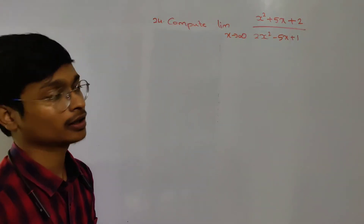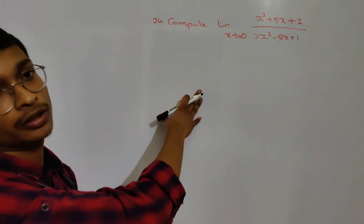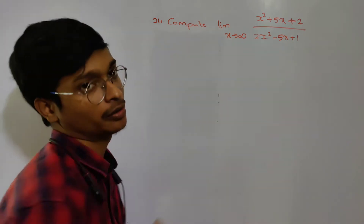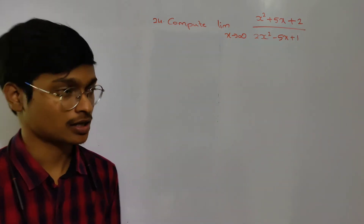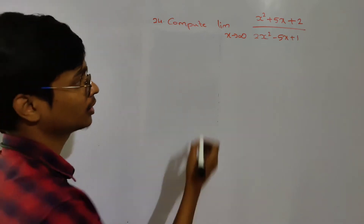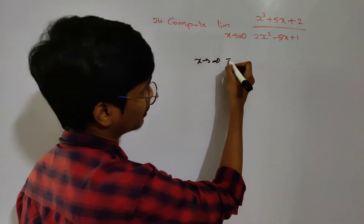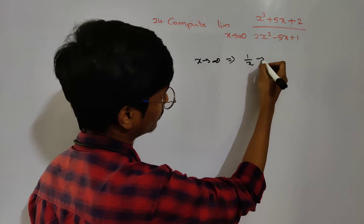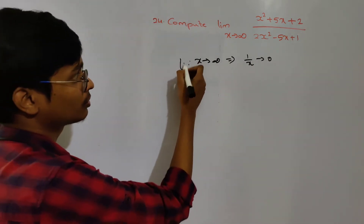This is the limit, sign, and continuity unit. We have to identify the limit sign continuity. The limit is x tends to infinity. When x tends to infinity, 1 by x tends to 0. This is a rule.